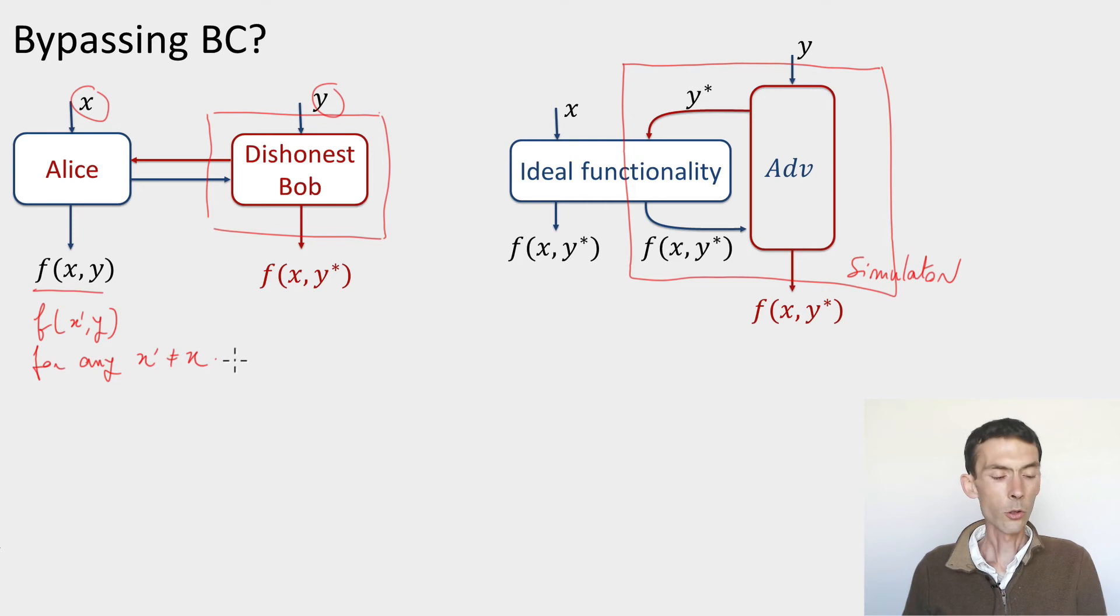And so, of course, in that case, the protocol is not secure. For instance, if you think about the AND function, it means that Alice can always pretend her input is x prime equals one, then she learned the AND of x prime and y, which means she gets to learn y, even if y is a zero, which contradicts the security for the AND function. So this should not be possible.